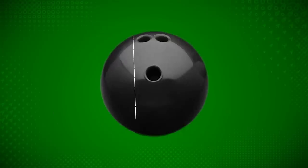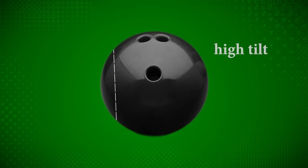If you want to see your tilt, mark off your PAP with white tape. Check out our one-minute tip on finding your PAP if you'd like to learn how. You can also look at your bowling ball track to find out where your tilt normally is. The closer the track is to your thumb hole, the lower the tilt. The further from the thumb hole, the higher the tilt.